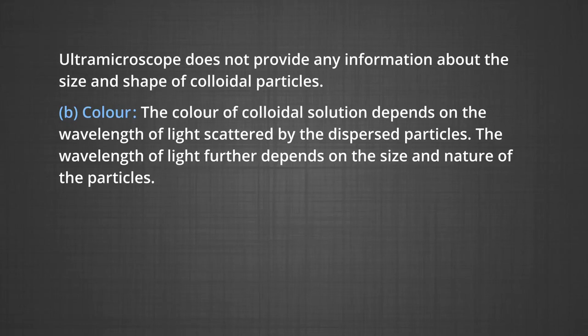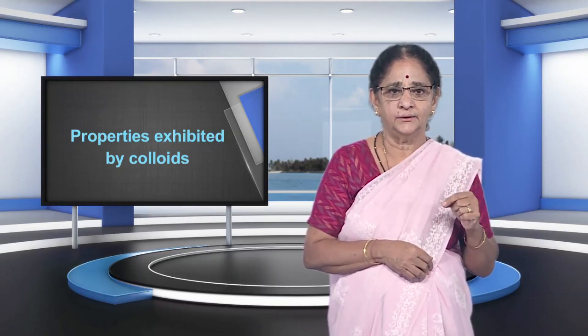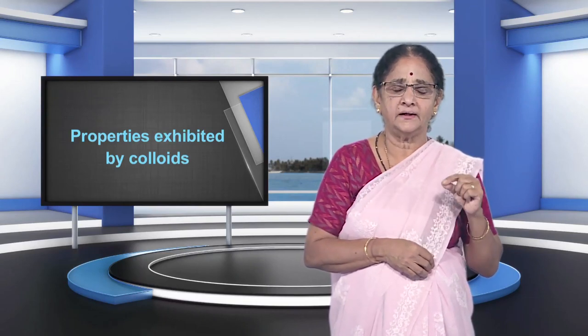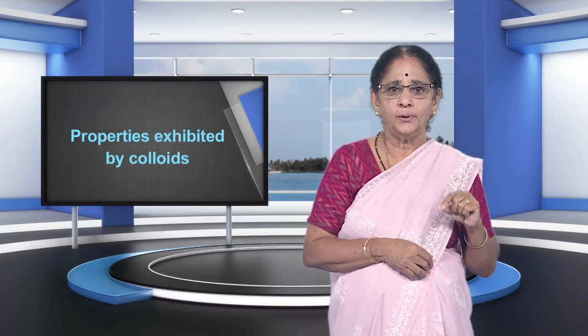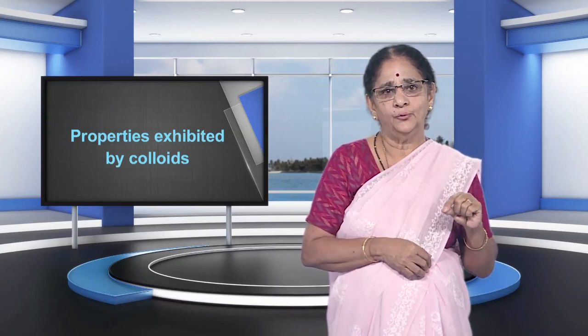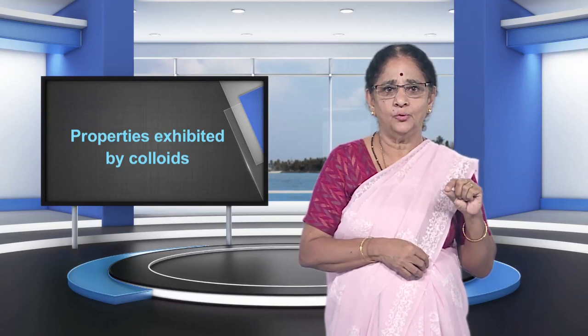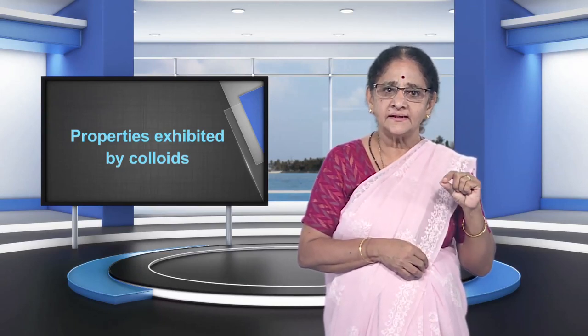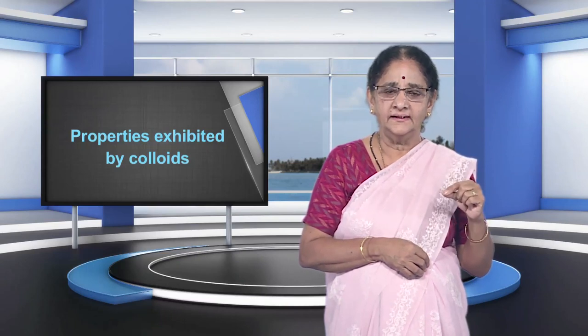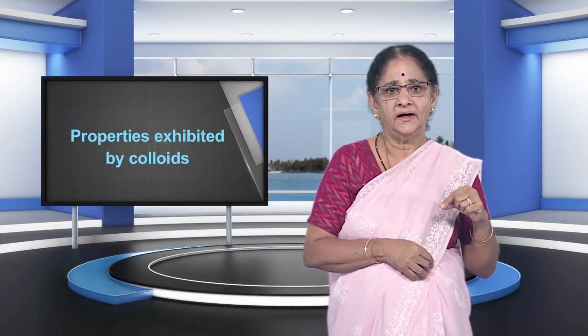B, color. The color of colloidal solution depends upon the wavelength of the light scattered by the dispersed particles. The wavelength further depends upon the size and nature of the particles. The color of colloidal solution also changes with the manner in which the observer receives the light. For example, a mixture of milk and water appears blue when viewed by reflected light and red when viewed through transmitted light. The finest gold sol is red in color; as the size of the particle increases, it appears purple, then blue, and finally golden.